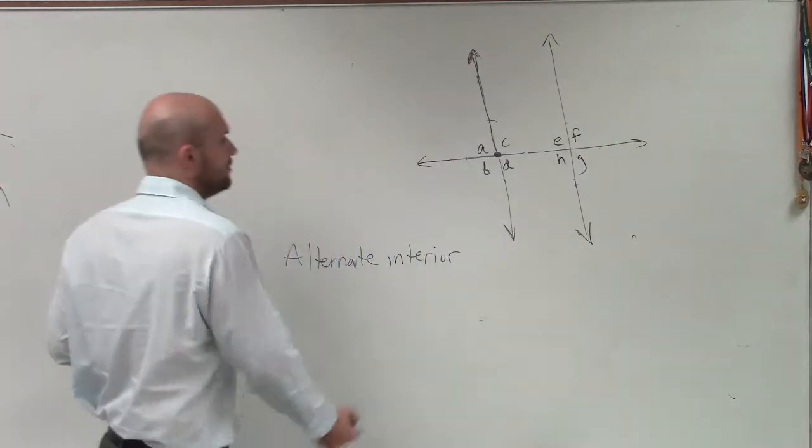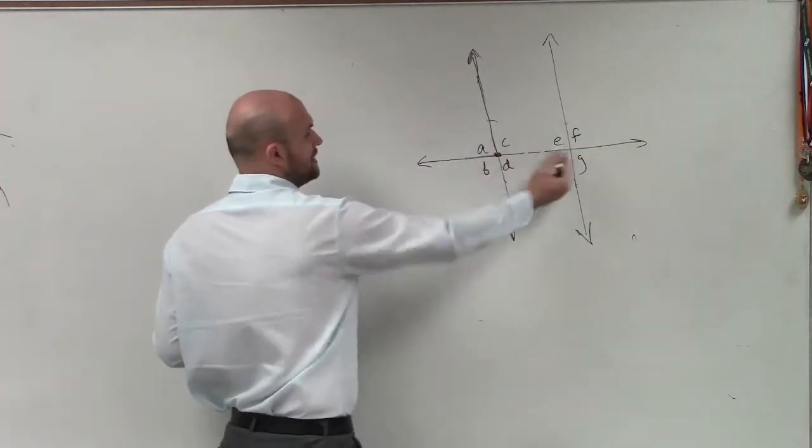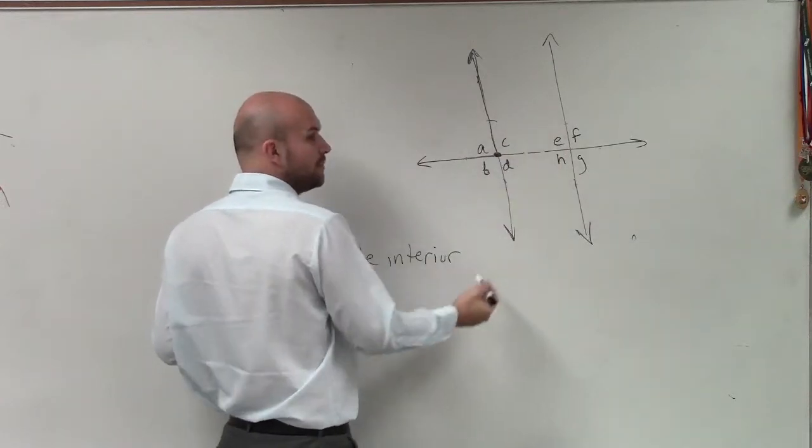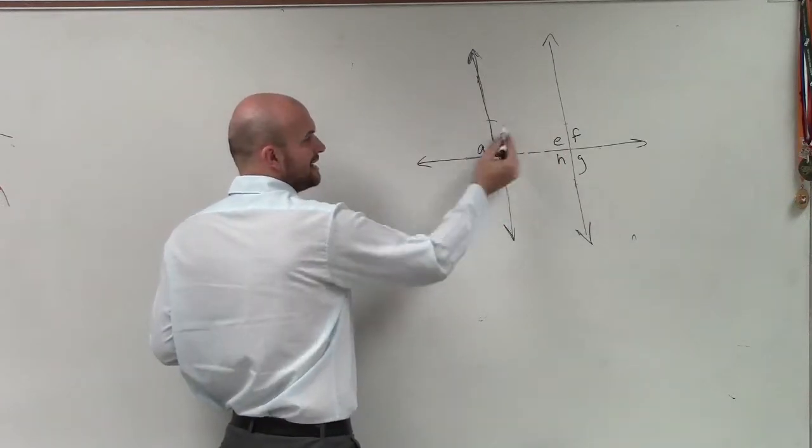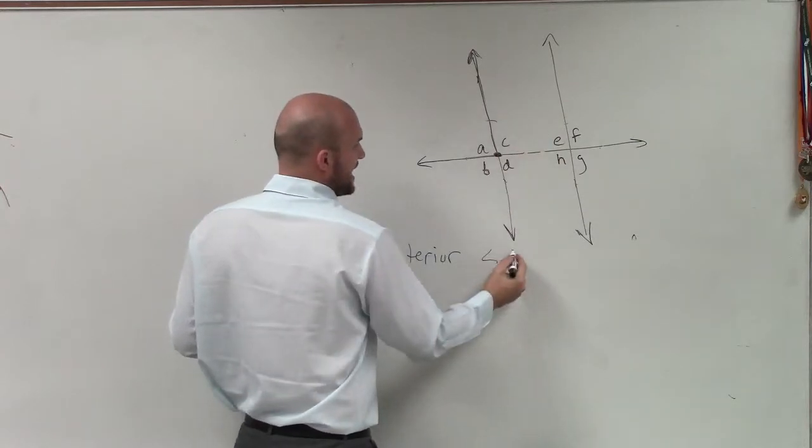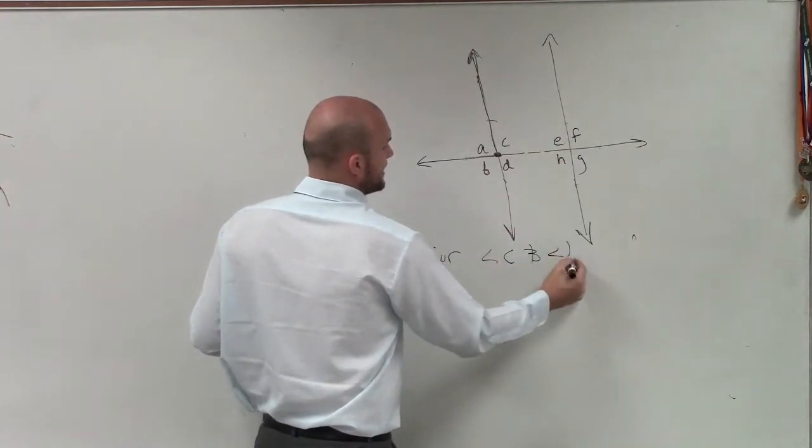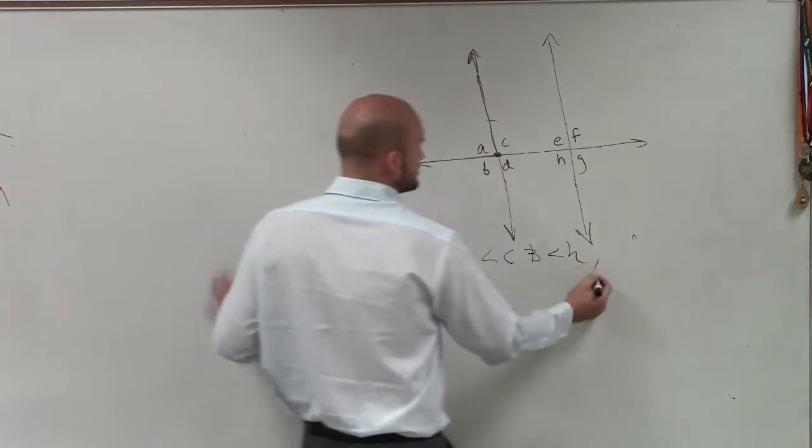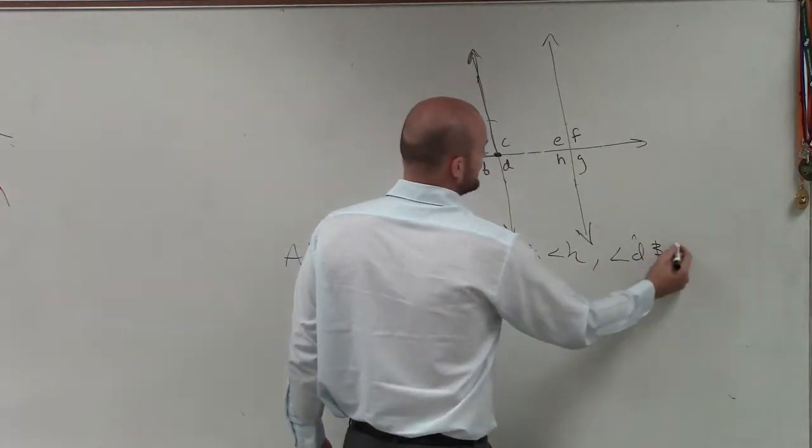So we have interior angles. That means the only interior angles we could do are C, E, D, and H. But what are the only two angles that alternate on either side? Well, you could say angle C and angle H, or you could also say angle D and angle E.